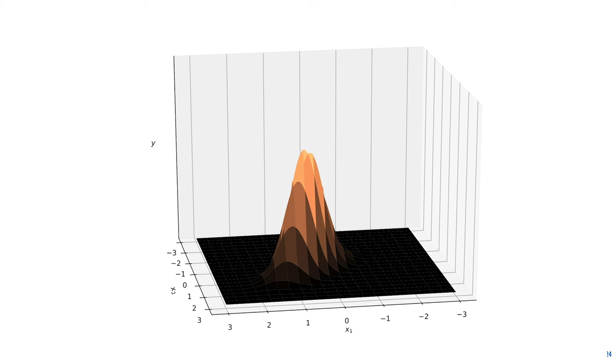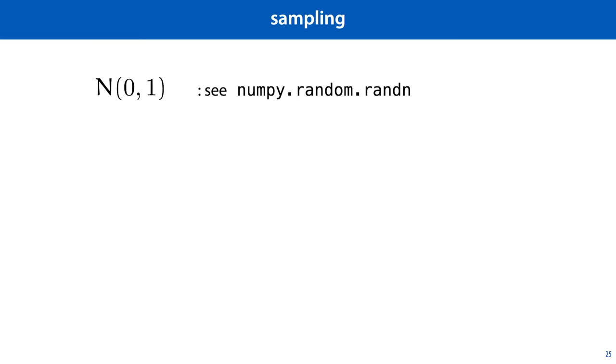This trick of seeing any normal distribution as a simple linear transformation of the standard normal distribution can also help us to work out how we should sample from a normal distribution. We can take the following approach. First, we'll take sampling from a univariate standard normal as read. This is usually done by an algorithm called the Box-Muller transform, if you're interested. But we'll assume that somebody has implemented this for us. We can then transform a sample from the standard normal distribution into a sample from a distribution with given mean and variance, as shown here. We multiply by the standard deviation and add the mean.